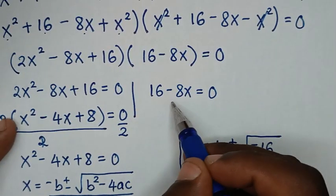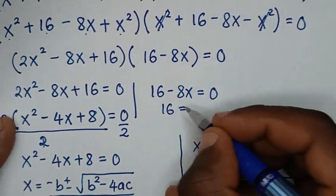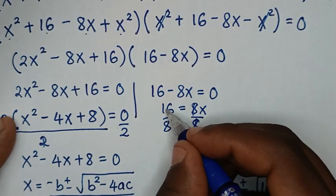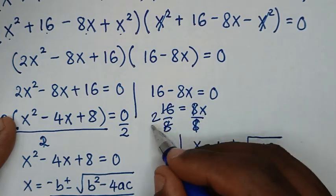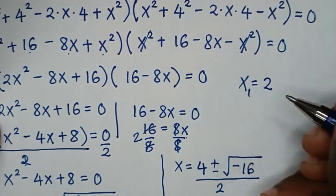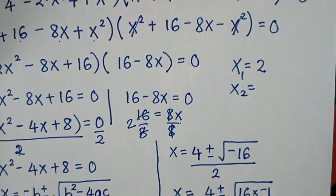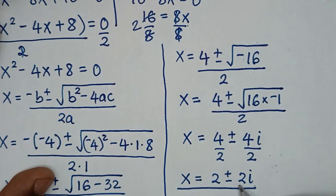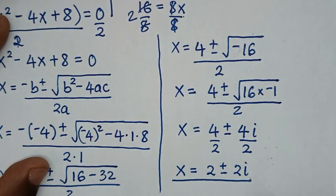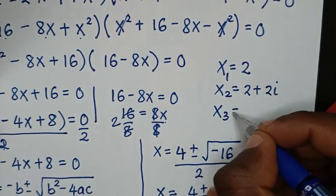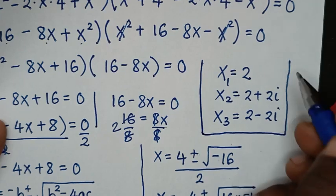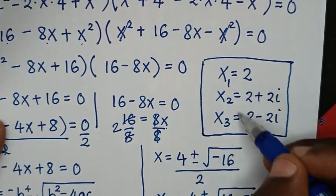From the second solution, 16 minus 8x equals 0. Taking negative 8x to the other side: 16 equals 8x. Dividing both sides by 8: x equals 2. This is a real solution. So we have three values of x in total: x equals 2 (one real solution), x equals 2 plus 2i, and x equals 2 minus 2i (two complex solutions).